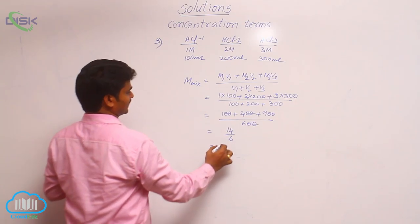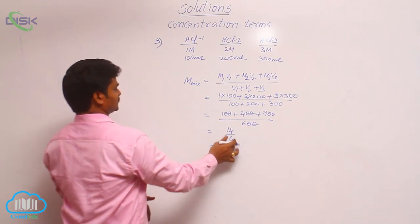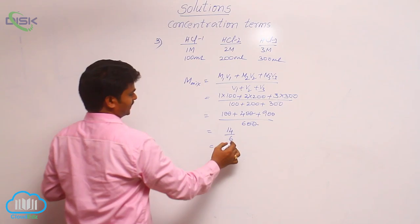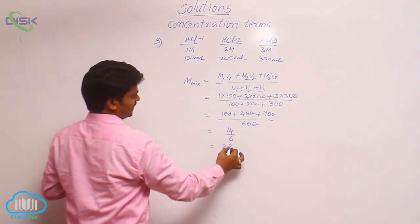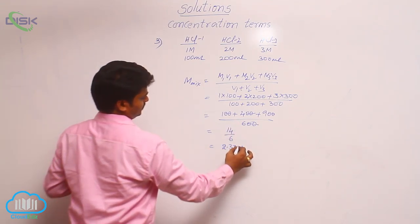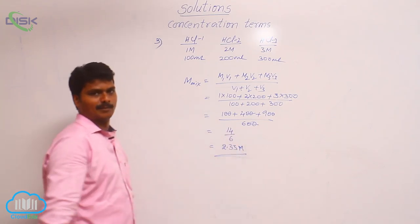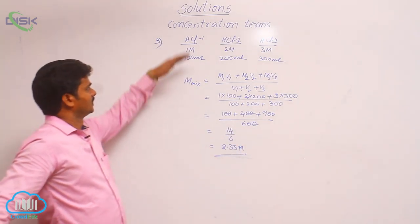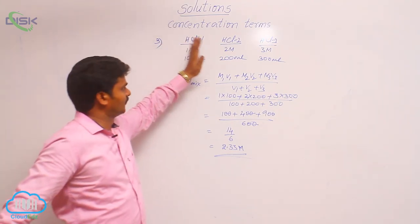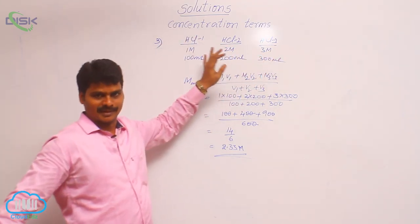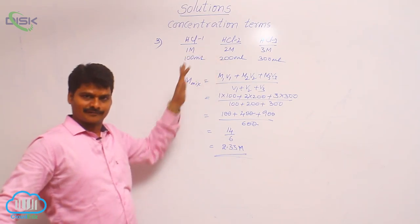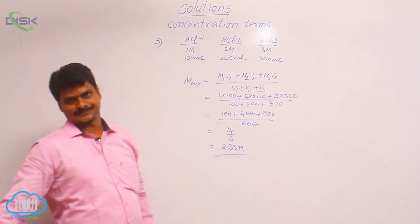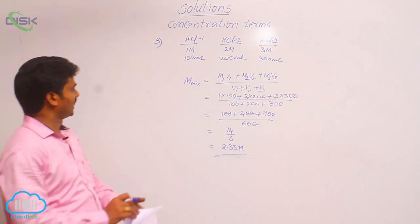14 divided by 6 gives 2.33 molar. So that is the molarity of the resulting solution. Have you understood? Three different solutions with the same solute are given, and this is how we calculate the molarity of the mixture.